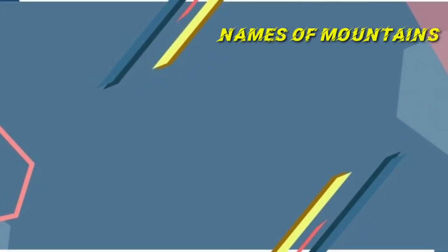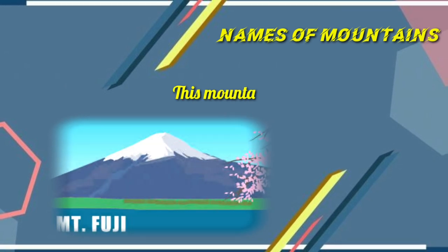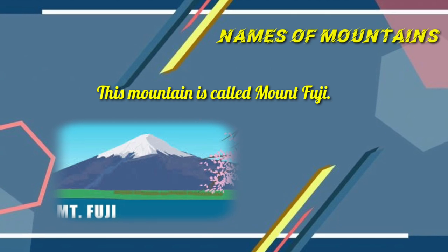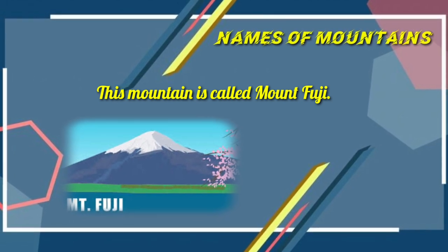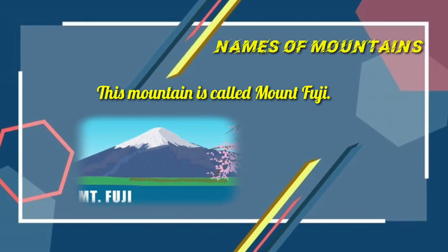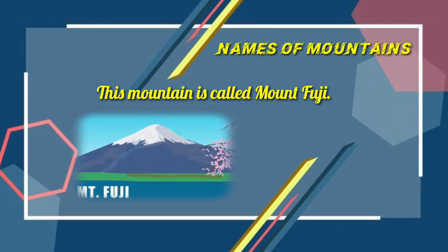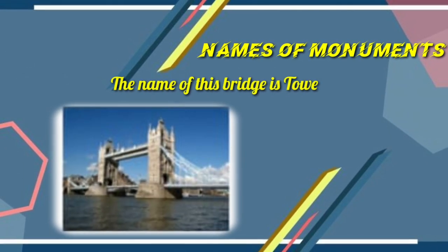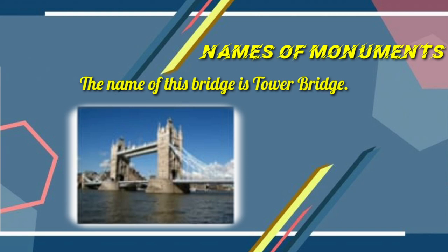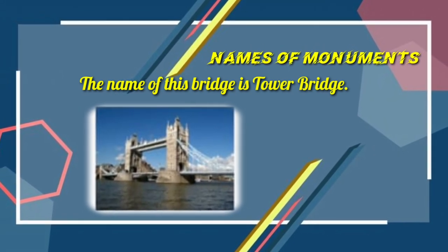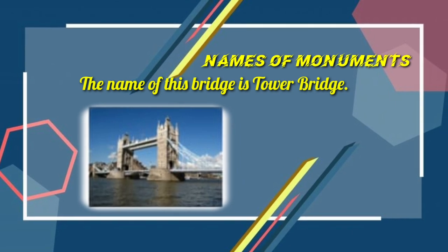Names of mountains — Example: 'This mountain is called Mount Quisi.' The two words 'Mount Quisi' are the name of the mountain, so both have capital letters. But the word 'mountain' by itself is a lowercase letter. Names of monuments — Example: 'The name of this bridge is Tower Bridge.' The two words 'Tower Bridge' are the name, so we use capital letters, but 'bridge' by itself is a lowercase letter.